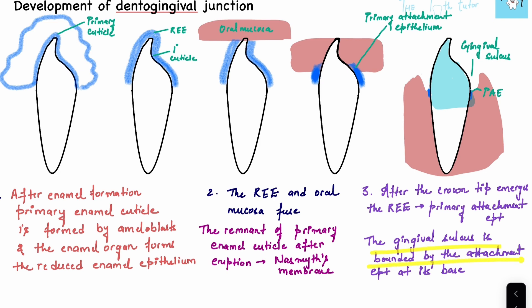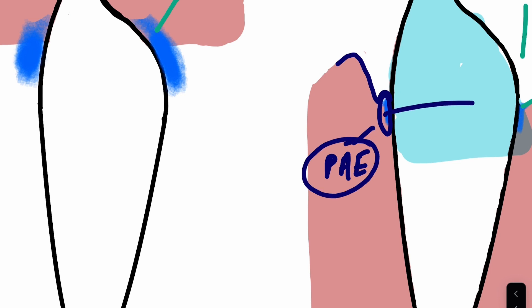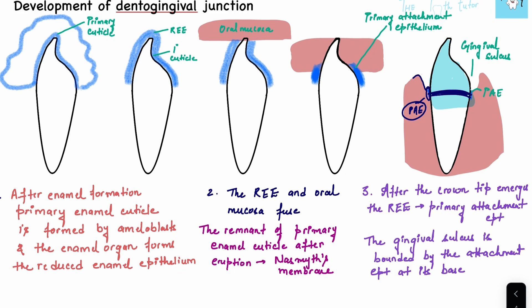The gingival sulcus is bounded by the attachment epithelium at its base. The sulcus ends where the primary attachment epithelium begins, and this primary attachment epithelium goes around the entire tooth along its circumference. This is how the dento-gingival junction develops.